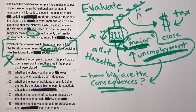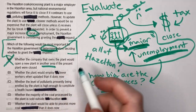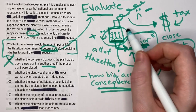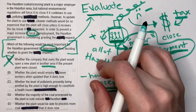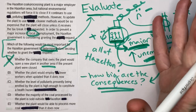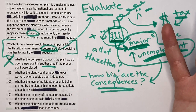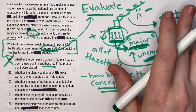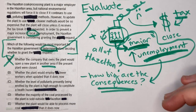Answer choice B asks whether the plant would employ fewer workers when updated than it does now. This is interesting. If yes — they update it but it's now more efficient so they fire people — that defeats the purpose: you'd give them the tax break and they'd still lay off workers, potentially keeping the unemployment problem. But if they would still employ everyone and just pollute less, then maybe the tax break makes sense. This answer choice is pretty good.